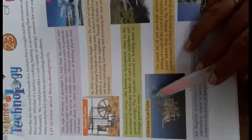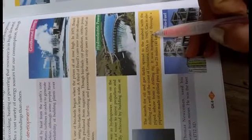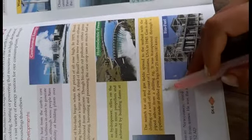Offshore gas field: The search for oil and gas fields spread to the seabed with the drilling of a well off the coast of Louisiana, USA, in 1945. Gas is also piped ashore from a drilling rig. Oil was transported through a pipeline made of drilled pipe for 25 miles (40 km).